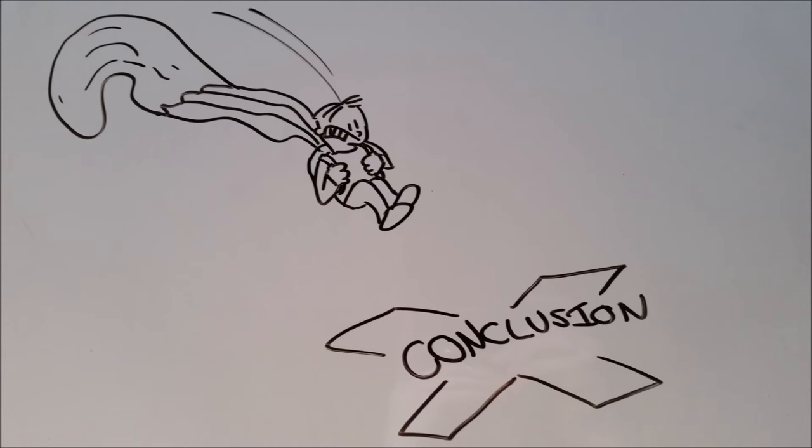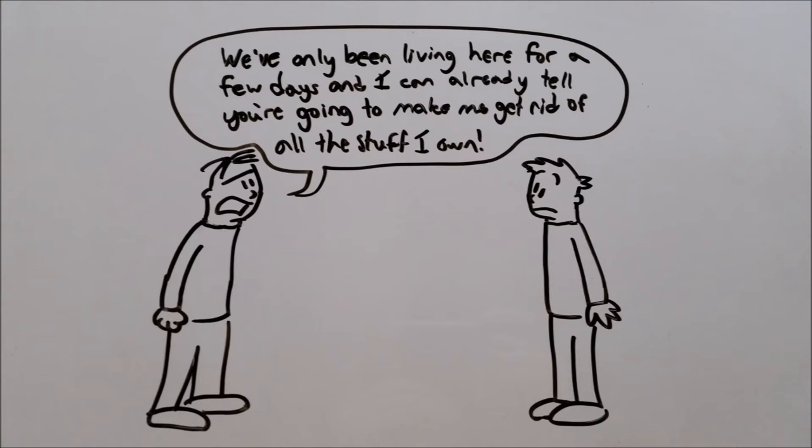Having a hasty generalization fallacy means jumping to a conclusion before any relevant facts are collected. If Bernard says, we've only been living together for a few days and I can already tell you're going to make me get rid of all the stuff I own. He's assuming that just because Alan has gotten right to the issue of the couch that everything else will go too, and he hasn't given enough time to see how Alan acts after an extended period of time.